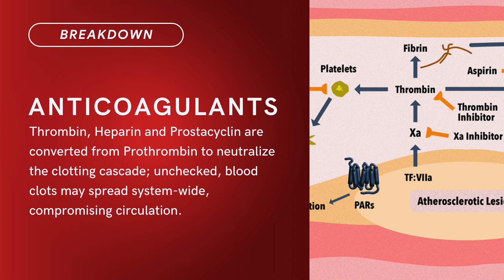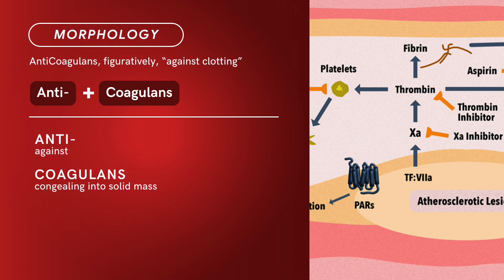Compound term: Anticoagulants. Brief definition — Thrombin, Heparin, and Prostacyclin are converted from prothrombin to neutralize the clotting cascade. Unchecked, blood clots may spread system-wide, compromising circulation.